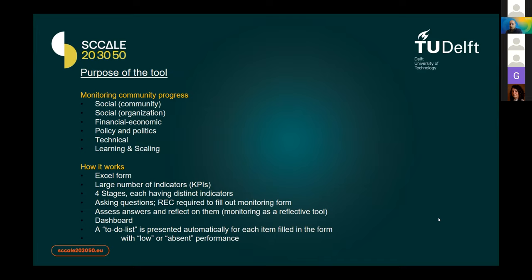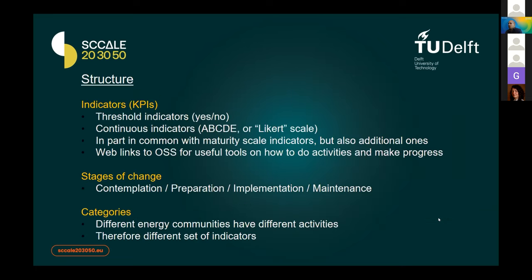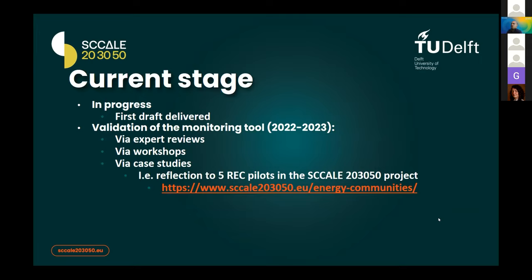The monitoring tool is currently in Excel form, where communities fill in questions for each development stage and receive an automatic assessment with a dashboard, a to-do list for all items, and formulated actions on how to improve performance. Links to the one-stop shop and other tools are included. The first draft has been delivered and is now being refined through expert review workshops within SCALE and reflection on five pilot projects. The tool will be available next year.